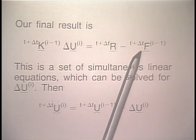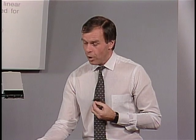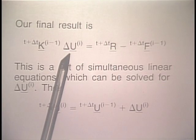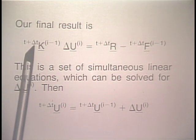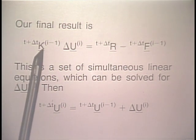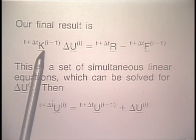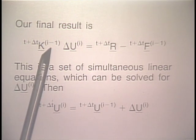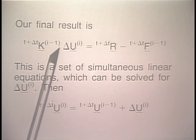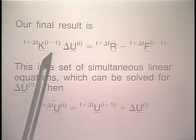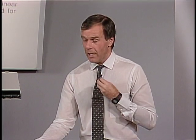The force vector is evaluated differently in the total Lagrangian formulation compared to the updated Lagrangian formulation — we talked about both vectors abundantly in previous lectures. Previously, we had a constant tangent stiffness matrix tK set up at the beginning of the iterative process and never updated. Here we now update that stiffness matrix, because we are always starting with a new Taylor series expansion about the point i-1.